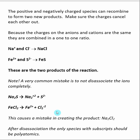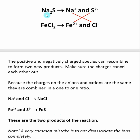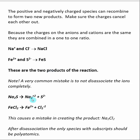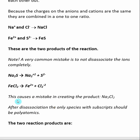A very common mistake is not dissociating ions completely. For example, instead of dissociating sodium sulfide into individual Na+ ions, students often write Na2 2+, keeping it as Na2 rather than separating it. Similarly, they may write Cl2−. If you make this mistake, you would get a product of Na2Cl2, which is incorrect. After dissociation, the only species that should have subscripts are polyatomic ions. Na2 2+ is not a polyatomic ion, so if you see that, you have probably done something wrong.